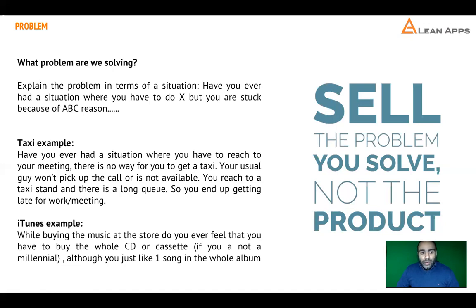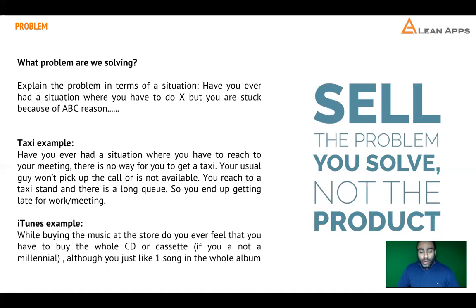The second example of defining a problem is in terms of iTunes. iTunes is basically a solution. Before iTunes, while buying music at a physical store, I would listen to a song and if I liked it, I'd have to forcefully buy the whole CD or cassette — basically the whole album — although I liked only one song. This was the problem which iTunes was trying to solve. This is how you define your problem.